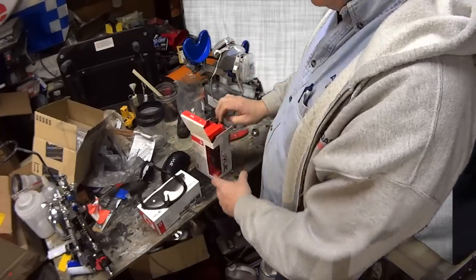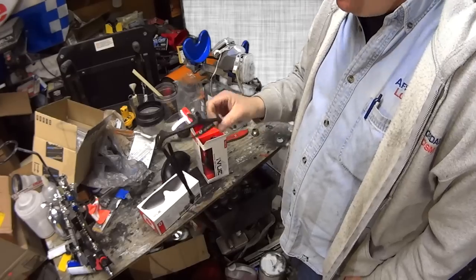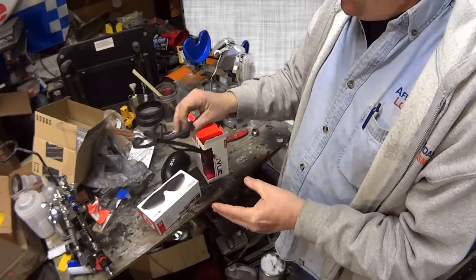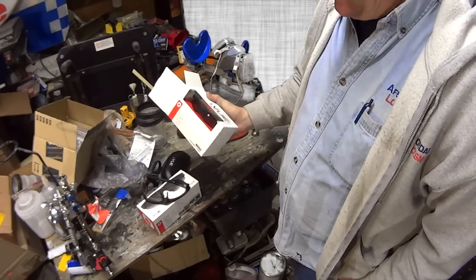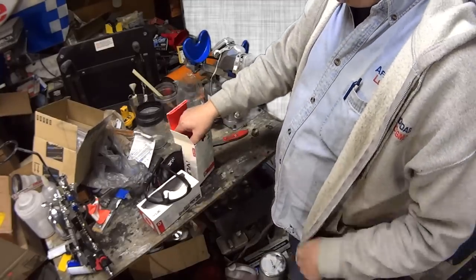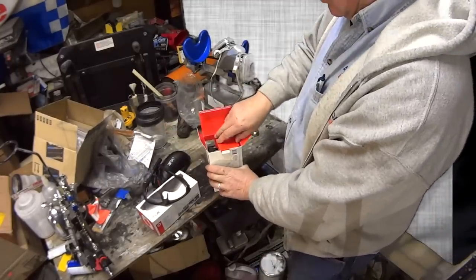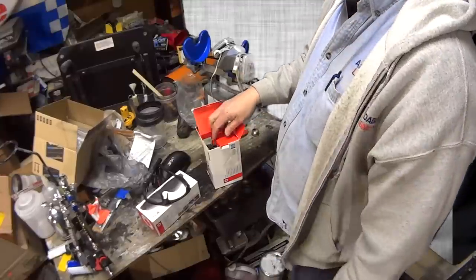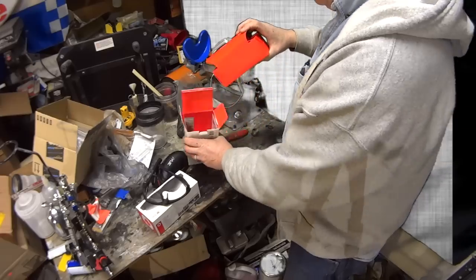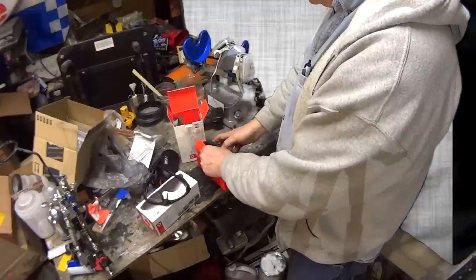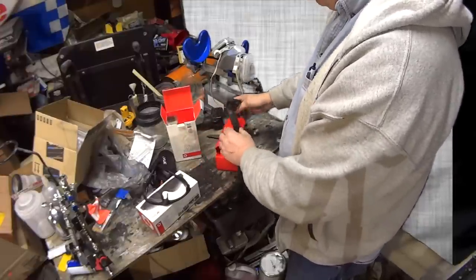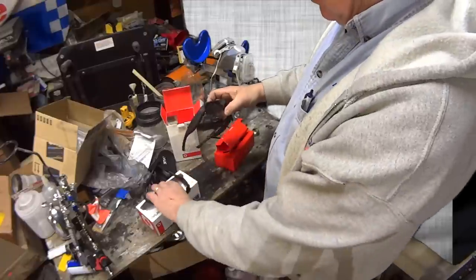Now there's a lot of inconsistencies with this iView company when I'm looking at it. The 720p I had to order the clear lenses separately, on the 1080 it comes with the clear lenses. This one you have to order the SD card separately, on this one it comes with an SD card. Now the price difference is about 40 bucks between the HD model, but when you actually add in a card and lenses you're probably close to the same stinking price.